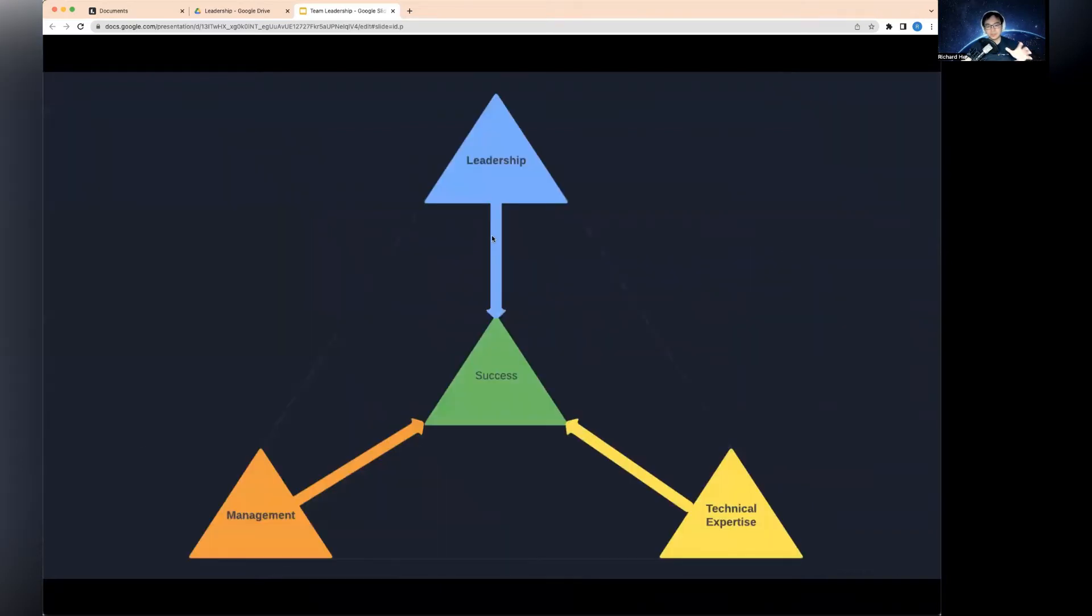So if you look at this triangle I prepared here, very often when people are talking about leadership, they only talk about leadership as a kind of vague concept. What exactly does it mean, especially in technology? In my opinion, I think it's actually broken down into those three parts. You've got leadership, management, and technical expertise.